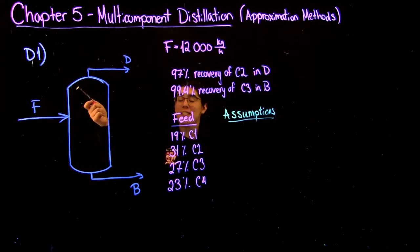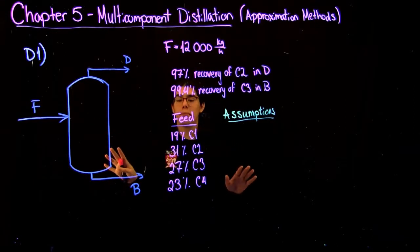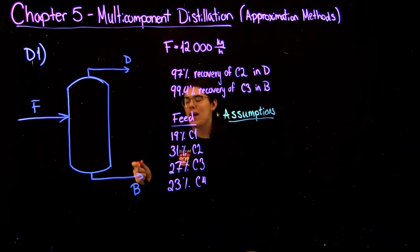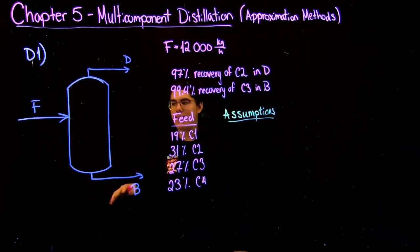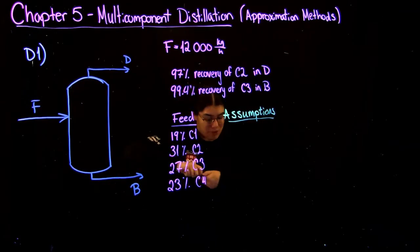So I'm going to be doing question D1 from chapter 5, and this is pretty representative of the type of question that you would be asked about heavy keys and light keys. In my opinion, it's one of the easiest parts of this course, so don't worry about it.